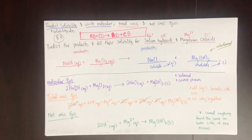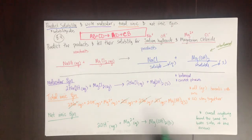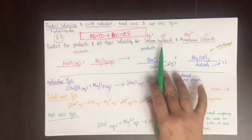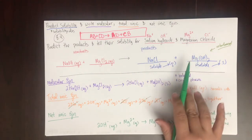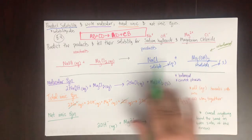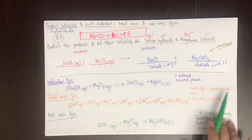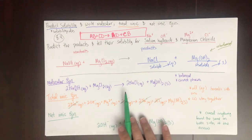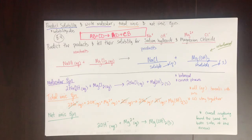You'll be asked to do all of this in homework examples and on exams, where you're given reactants, predict the products, then write the molecular equation, the total ionic equation, and the net ionic equation.